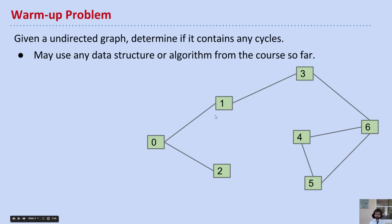So for this graph, for example, your algorithm should return true, because there is a cycle here. And you're allowed to use any data structure or algorithm from the course so far, your choice. And so pause me, and then I'll spoil it as soon as you're ready.